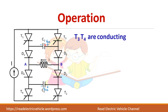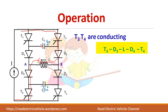We are assuming that before starting, T3 and T4 were in conduction. So the initial current path is T3, D3 through the load, D4 and T4. This is the initial condition and the capacitor has an initial charge. The charging and discharging of the capacitor helps to commutate the thyristors. The initial voltage on the capacitor is minus Vc0.